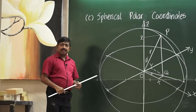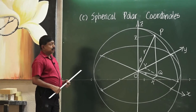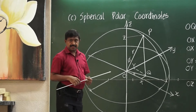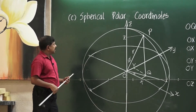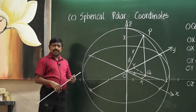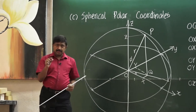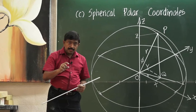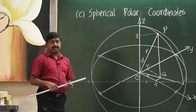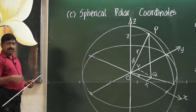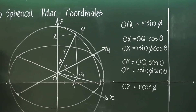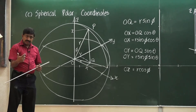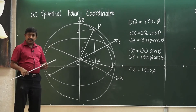We finally arrived at spherical polar coordinates, the last standard coordinate system. This coordinate system is important when you deal with spheres or portions of spheres. We will see how we apply spherical polar coordinates in such situations when we arrive at examples.